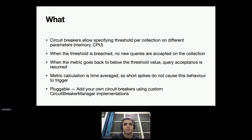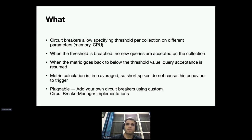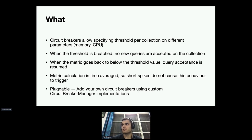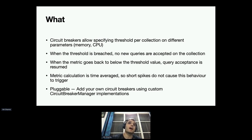Circuit breakers are a convenient way of defining what your cluster's behavior should be under duress. The default implementations are memory and load-average CPU circuit breakers, and they are pluggable — you can write your own by implementing or overriding the circuit breaker management class. These are per-collection, because typically in organizations each collection has a different use case. So it's fair that each collection can define its own threshold — a less important collection can have a threshold of 60% JVM and a higher-priority one can have 90%.